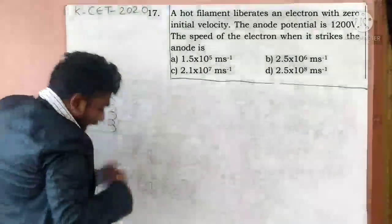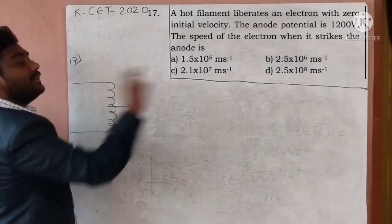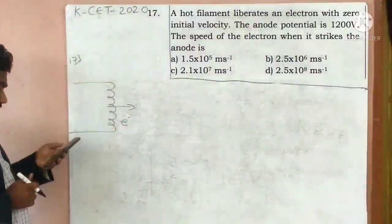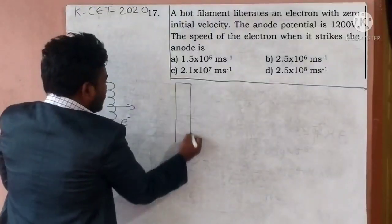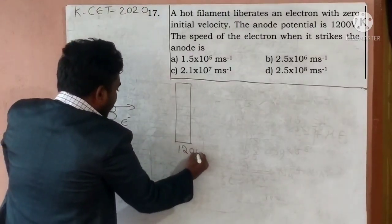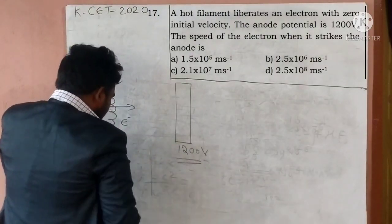what is liberates? Electron is liberated. Electrons is liberated, ejected, imagine. What is it? The anode. The anode plate is here. Here the potential is. This is 1,200 volt potential.